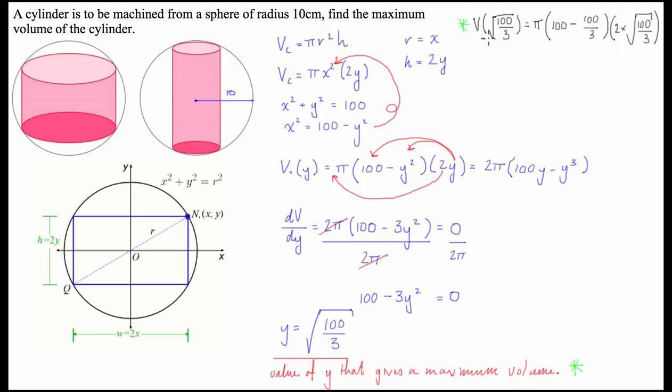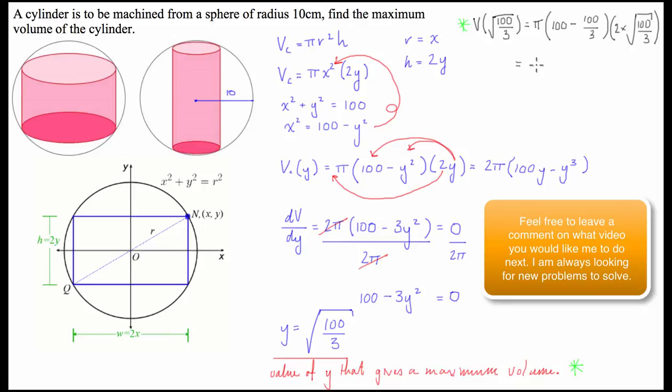And what we find is if you put that into your calculator, or you can solve it by hand, whichever floats your boat, you're going to get a maximum volume, so Vmax, is equal to 2,418.4. Now, this is centimeters, so this is going to be centimeters cubed. And there is our solution.